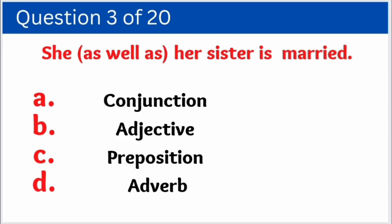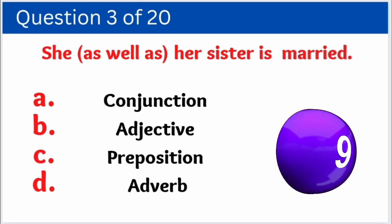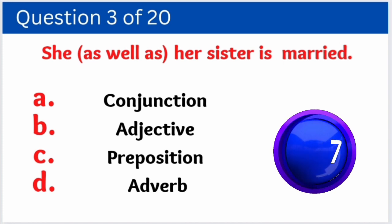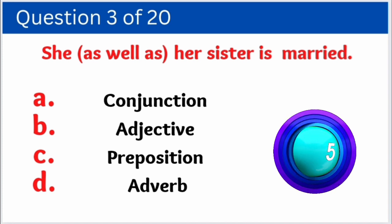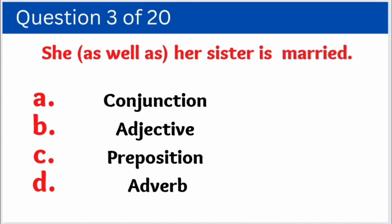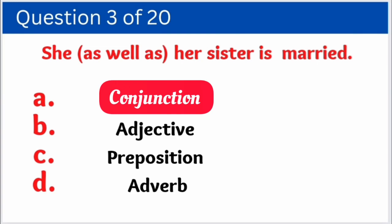Question number three: 'She as well as her sister is married.' Here we have to identify how 'as well as' is used. Options are: A. Conjunction, B. Adjective, C. Preposition, D. Adverb. And the correct answer is option A — Conjunction.